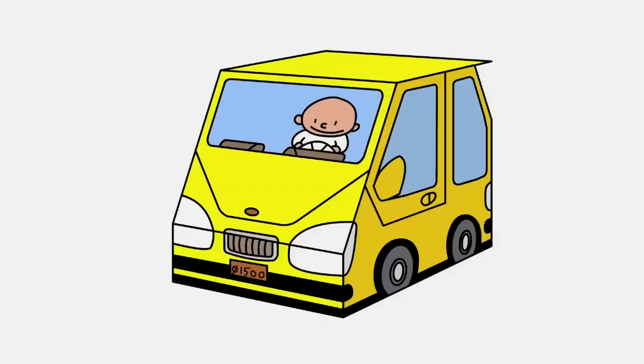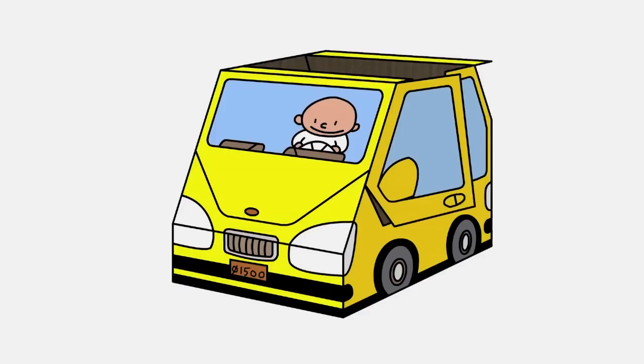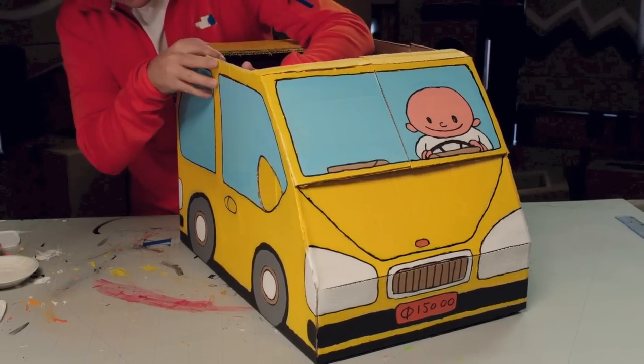Now we need to open up the car so that we can get in. First, cut a hole on the top to make a sunroof. Then cut around the door but leave one edge so that the door doesn't fall off. Design mirrors can also be cut out.